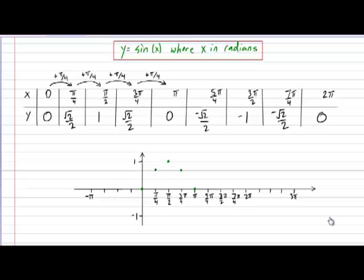When x is 5 pi over 4, it goes down to negative root 2 over 2, which is around negative 0.7. When x is 3 pi over 2, the y value goes down further to negative 1. When x is 7 pi over 4, it starts going back up to a value of negative root 2 over 2. And finally, after one turn around the full circle, we are at x equals 2 pi, which gives us a y value of 0.